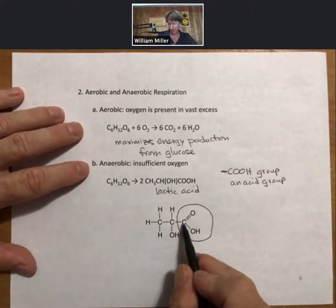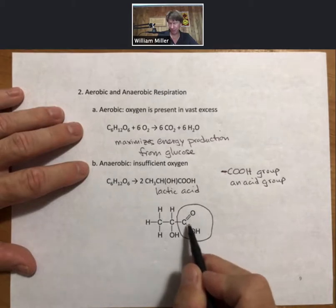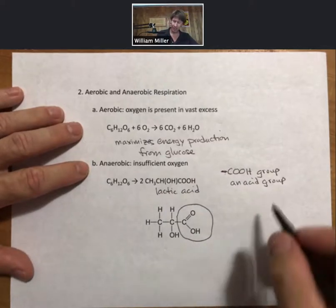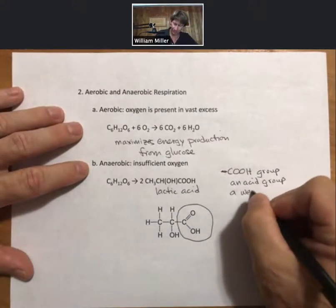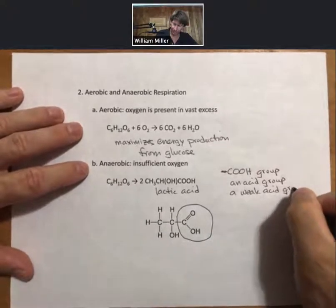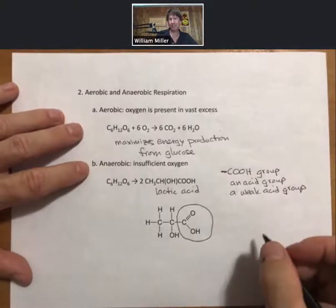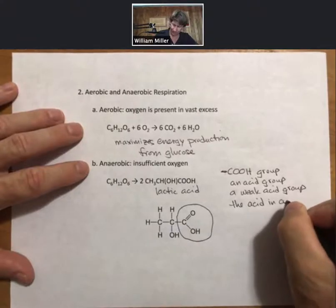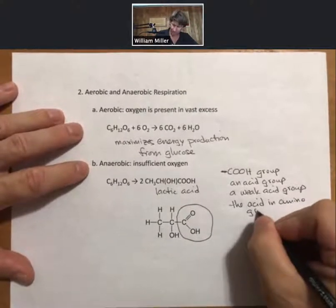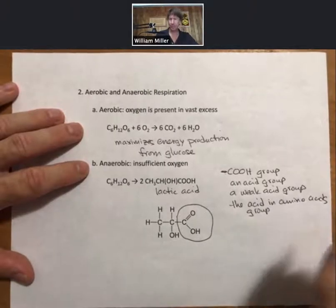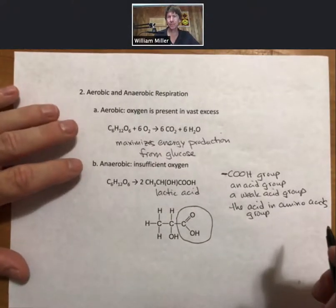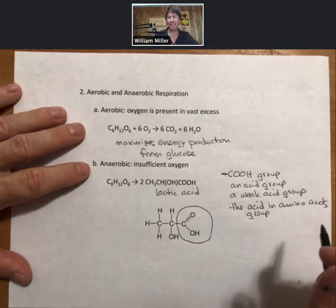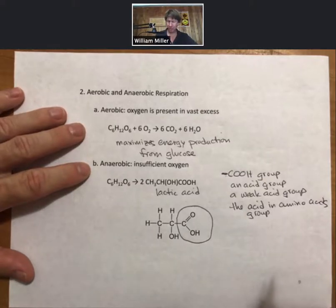It always looks like this. It has bonds to carbon, double bond to an oxygen, and single bond to an OH. We haven't even talked about bonding yet, but we will. It is an acid group. It is a weak acid group. It is the acid in amino acids, or the acid group in amino acids. And so it's a very common thing. There are literally, and I don't use that word lightly, thousands of weak acid-containing compounds. And so it's a good thing to know.